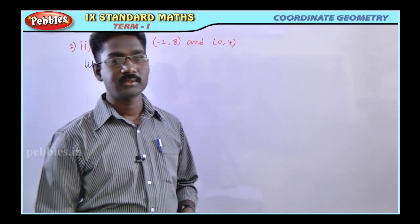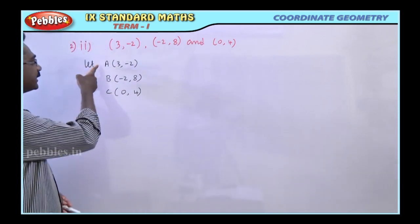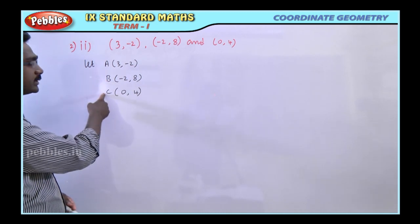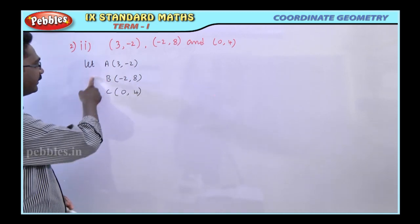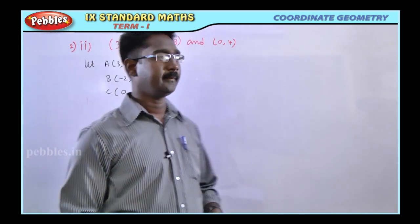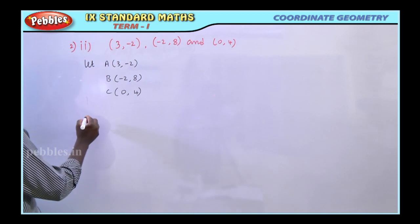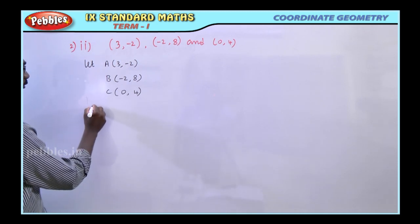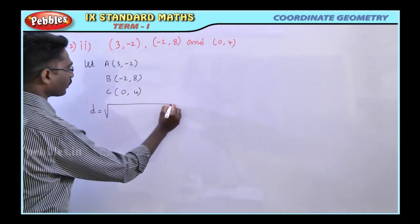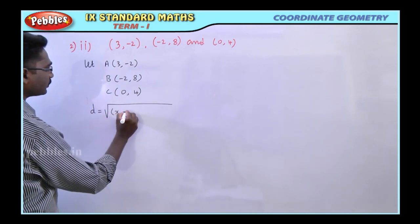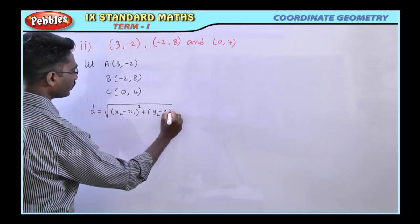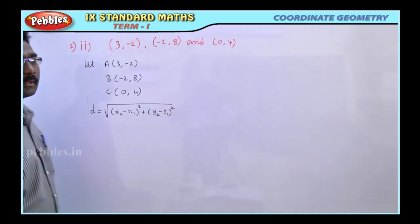First, the distances can be found. Find the distance between A and B, next the distance between B and C, and the distance between A and C — three distances: AB, BC, CA. The distance formula between two points is D = √((X2 - X1)² + (Y2 - Y1)²).